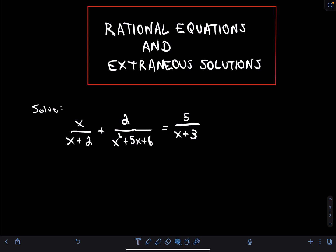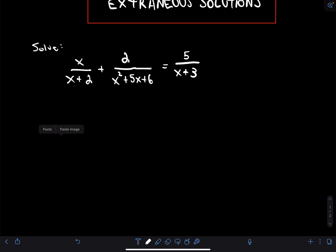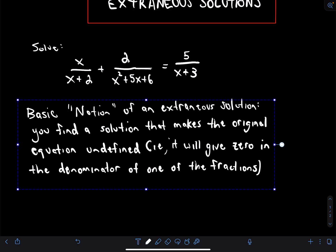In this video I just want to look at an example of a rational equation that has an extraneous solution. A rational equation is where you have polynomials divided by polynomials. Here we have x over (x+2) plus 2 divided by (x²+5x+6) equals 5 divided by (x+3).